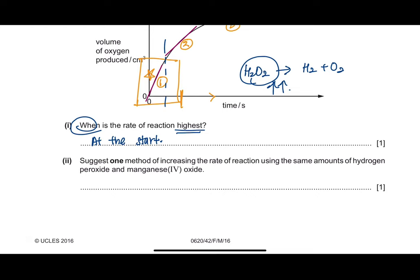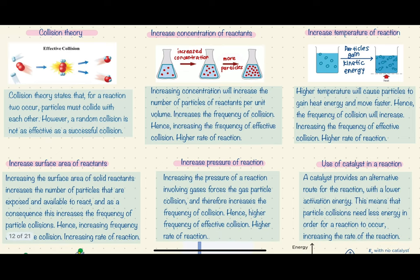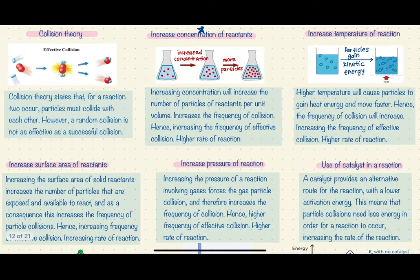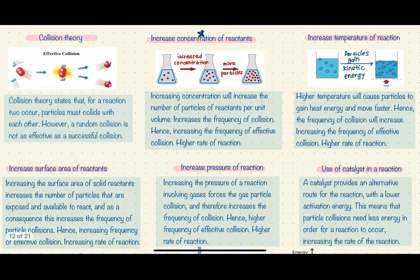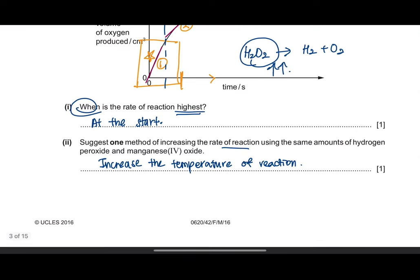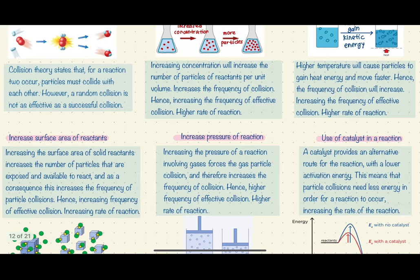Question 2 asks you to suggest one method of increasing the rate of reaction using the same amount of hydrogen peroxide and manganese oxide. Since the amount of reactants must remain the same, you cannot change the concentration. However, the most common method is by increasing the temperature of the reaction. Alternatively, you could increase the surface area of the reactant by using powdered manganese oxide instead of large lumps.